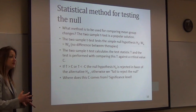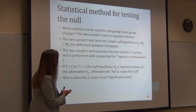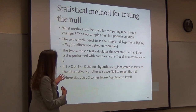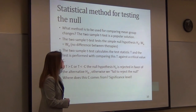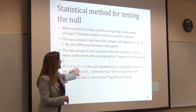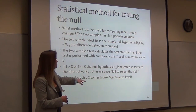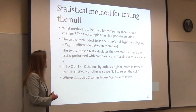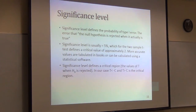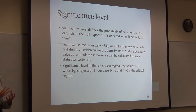The alternative hypothesis is that if we want to see an improvement of five pounds, the difference between the two groups would have to be five. The method used to compare these two mean group changes would be a t-test, which assumes normality. The null hypothesis has no difference between therapies. The two-sample t-test calculates the difference and compares it against the critical values — the treatment effect is either larger than the critical value or less than the negative of the critical value. The significance level defines the probability of type one error, usually five percent, which is the gold standard.